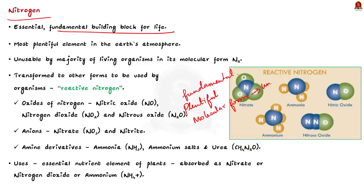The term reactive nitrogen includes oxides of nitrogen, anions and the amine derivatives. Here, oxides of nitrogen includes the nitric oxide, nitrogen dioxide and nitrous oxide. And the anions include nitrate and nitrite. And then amine derivatives include ammonia and then ammonium salts and urea. So remember, all these are called as reactive nitrogen.